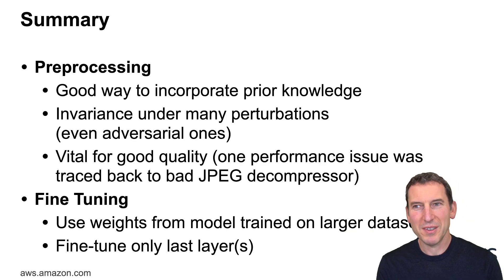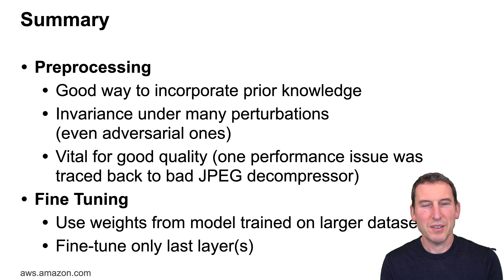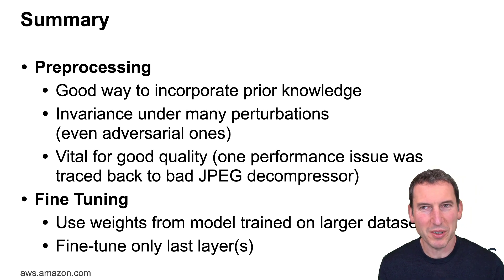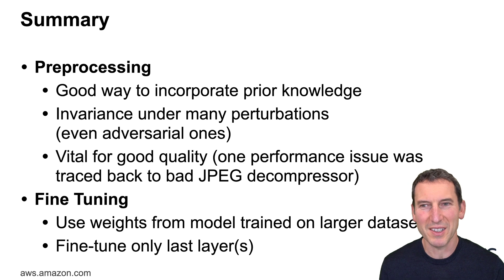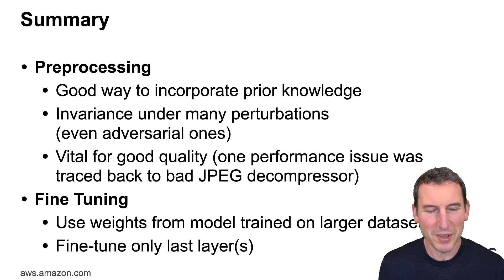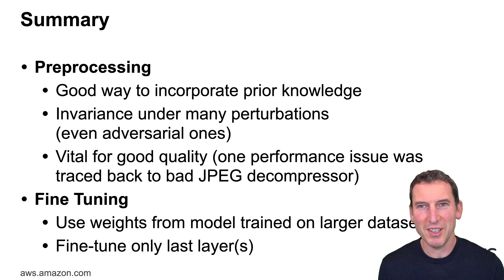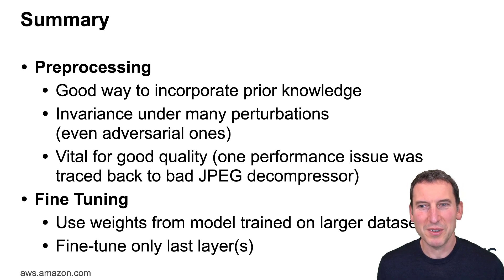To sum up: pre-processing is a really good way of incorporating prior knowledge. If you have mechanisms for changing people's hairstyles in a non-destructive manner you get algorithms that work on people in a more invariant manner relative to their styles. If you can change lighting, conditioning, and exposure, you can address those too — this is really vital for good quality. One image classifier performance issue was traced back to a bad JPEG decompressor, so pre-processing really matters and in some cases it's the pre-processing that gives you the good accuracy on the models. Fine-tuning is something you really want to do in practice for pretty much any computer vision problem, since your labeled data for the specific problem will likely be much smaller than the overall available data.